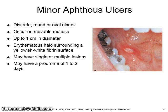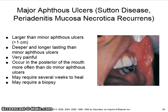Minor apthous ulcers are discrete, round, or oval ulcers that occur on movable mucosa and are up to one centimeter in diameter. An erythematous halo surrounding a yellowish-white fibrin surface is a typical appearance. A patient may have a single or multiple lesions, and the ulcers may have a prodrome of one to two days. Major apthous ulcers, also called Sutton's disease or periodontitis mucosa necrotica recurrence, are larger than one centimeter in width, deeper, and longer lasting. They are very painful, normally occur in the posterior of the mouth, may require several weeks to heal, and in some cases may also require a biopsy.